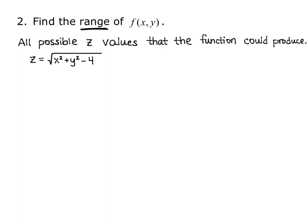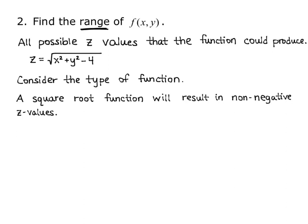Now, let's consider the type of function. We know that a square root function will always produce or will always result in a non-negative output. In this case, non-negative z values.